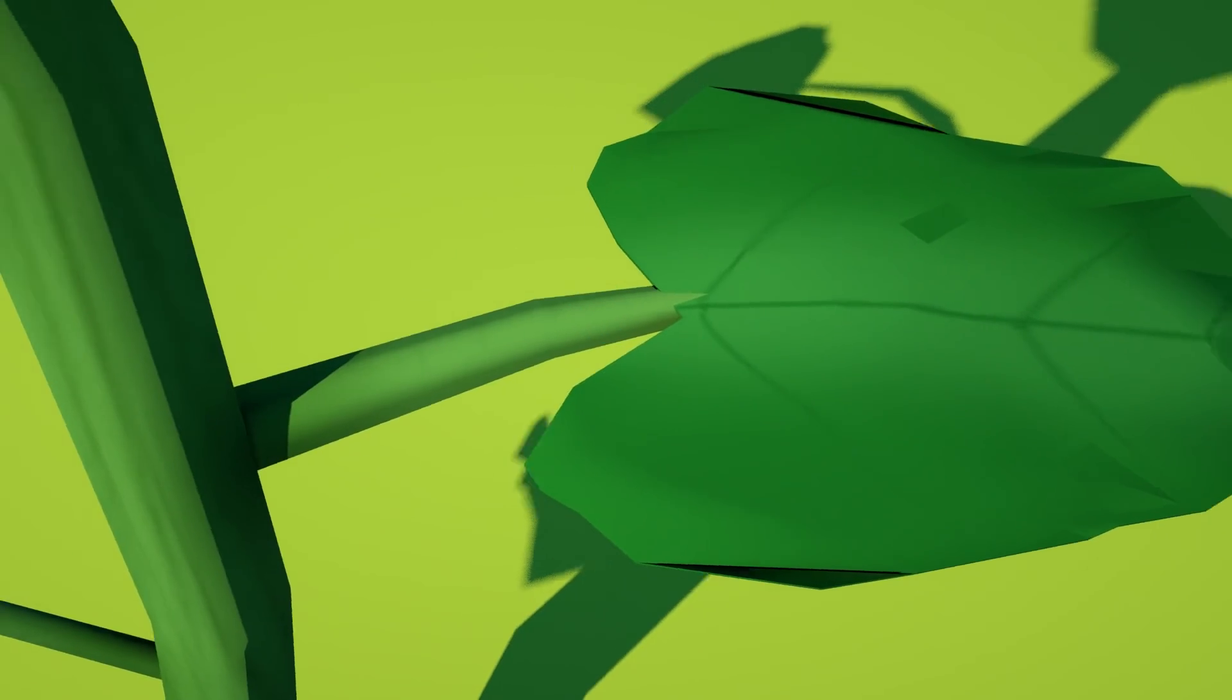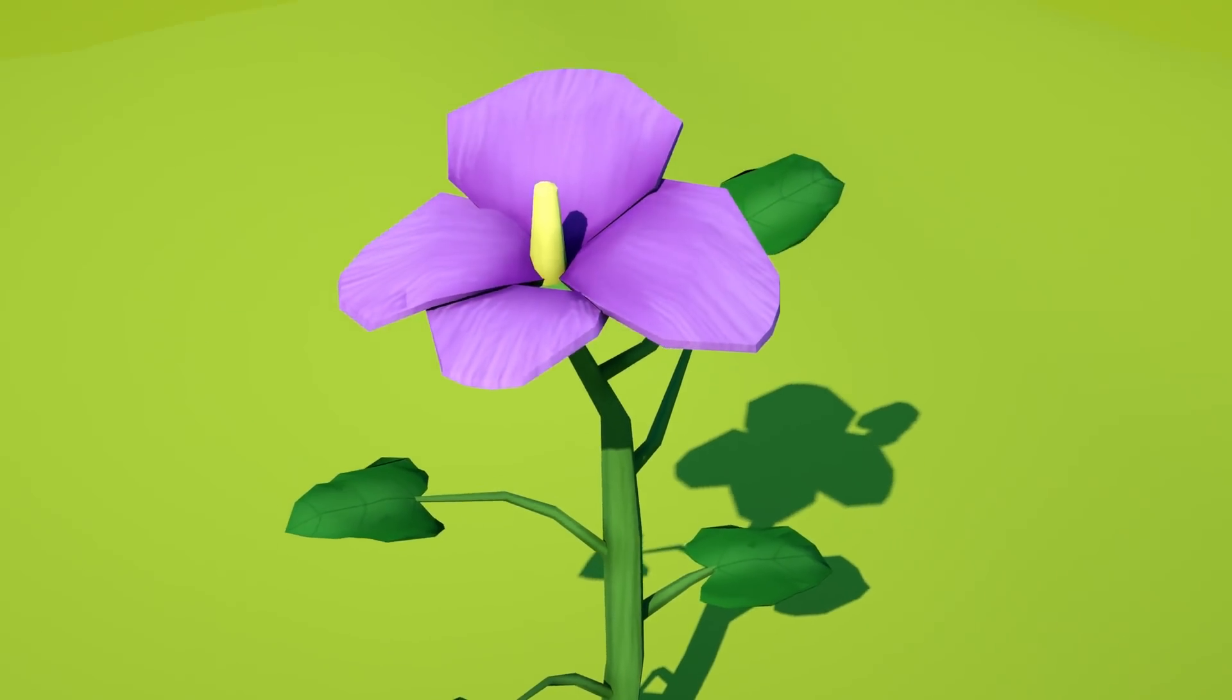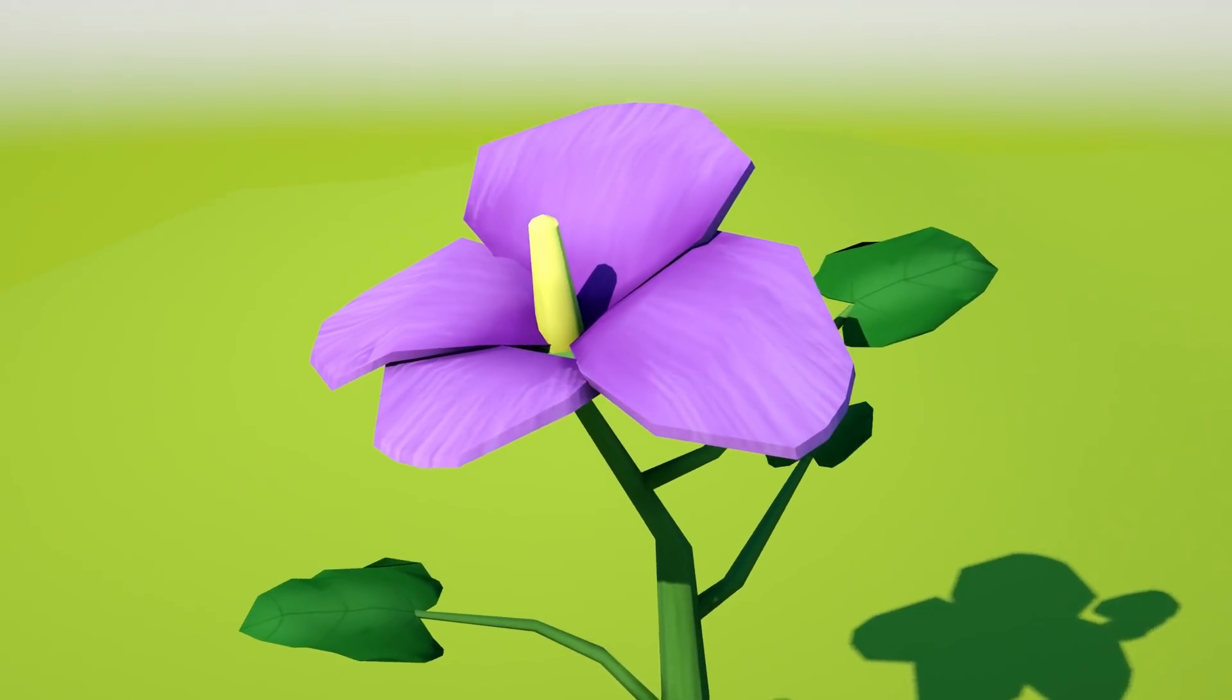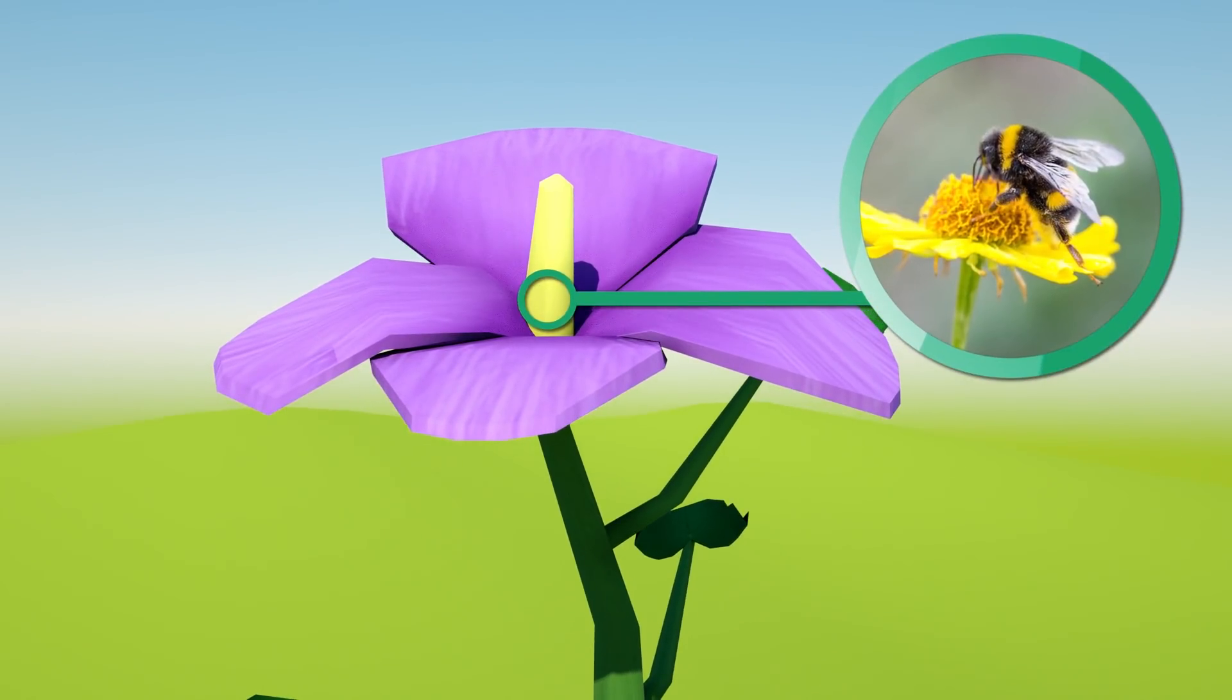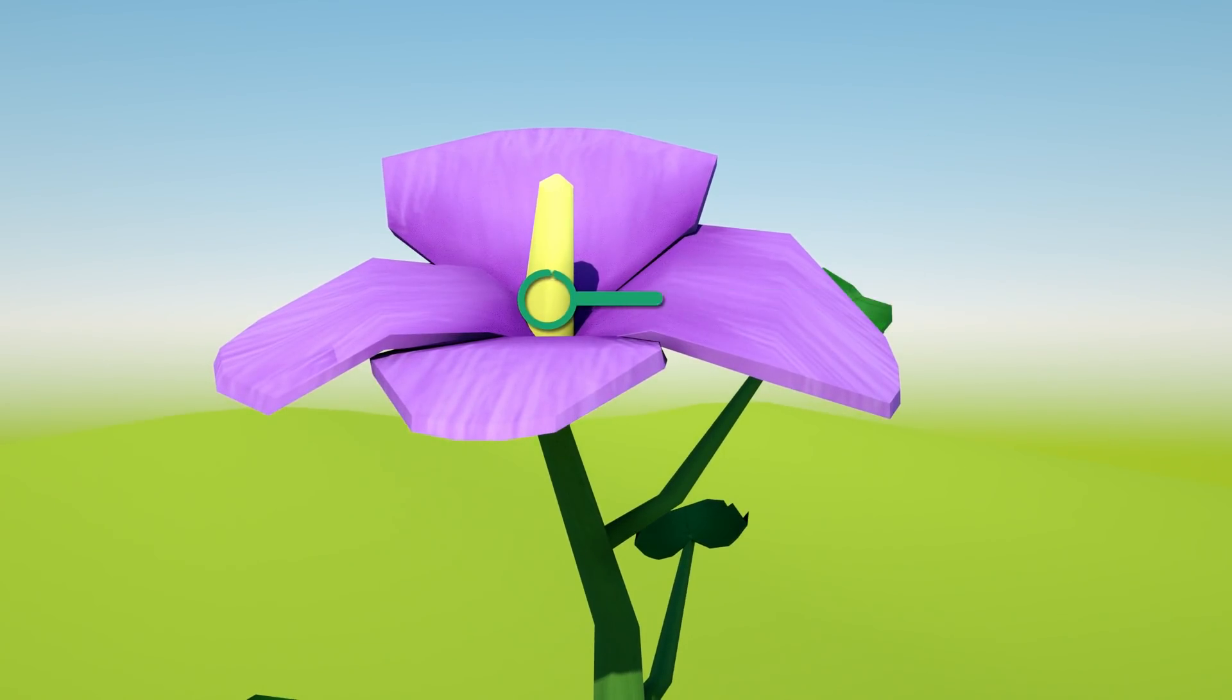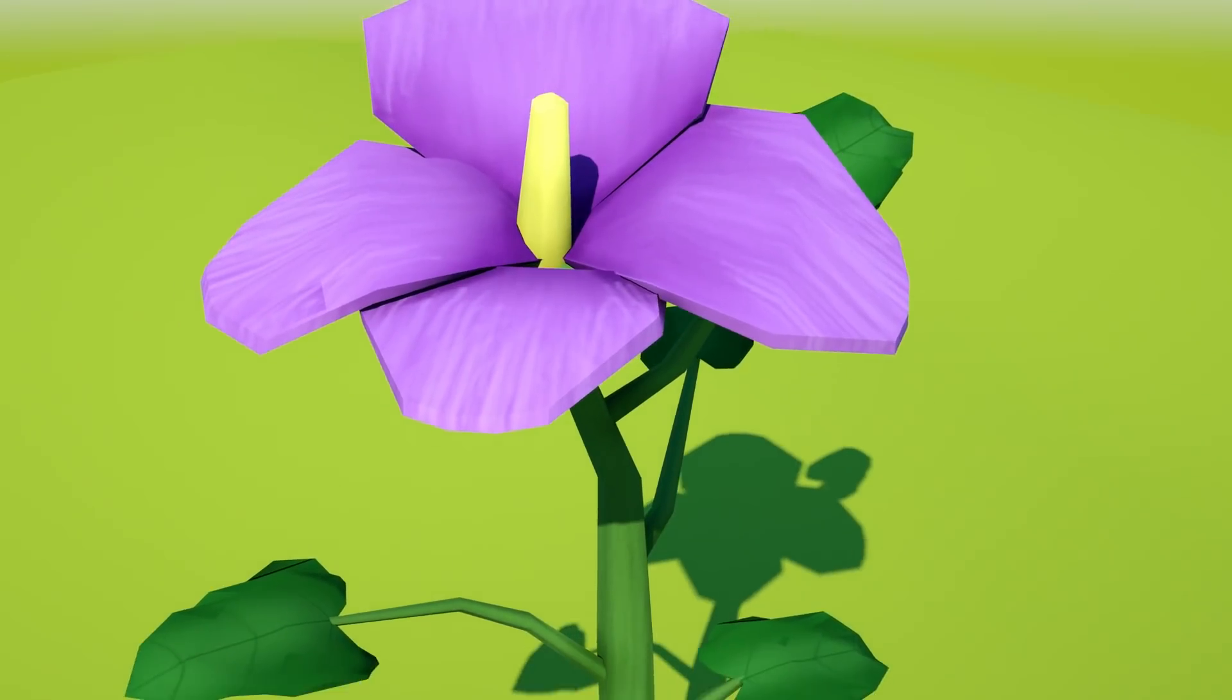The flower. Flowering plants are also known as angiosperms. Flowers are the reproductive structures of the plant. All fruits come from flowers. Flowers contain seeds.